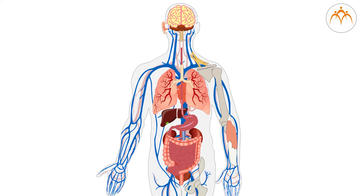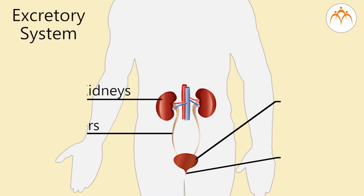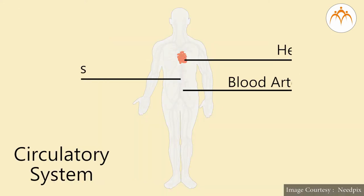All these organs constitute different organ systems. For example, kidneys, ureters, urinary bladder, and urethra contribute to the excretory system. Heart, blood, arteries, and veins are part of the circulatory system. Functions performed by these organs are called life processes.